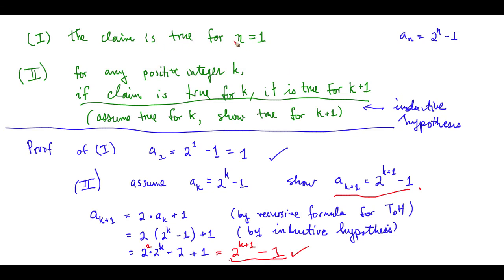We know that the claim is true for the basic case of n equals 1, and we know that if the claim is true for k, it must be true for k plus 1. So a sub k being true implies that a sub k plus 1 is true. Combined with step 1, the claim is true for all positive integers starting from 1 and above.